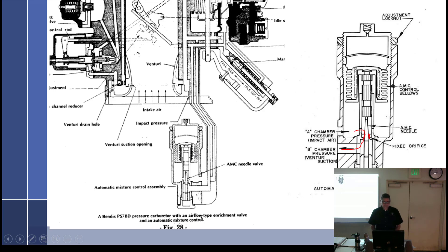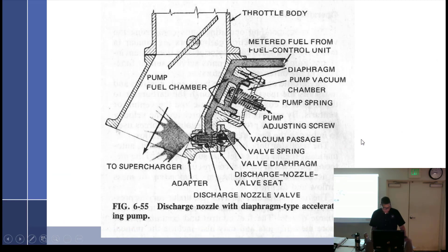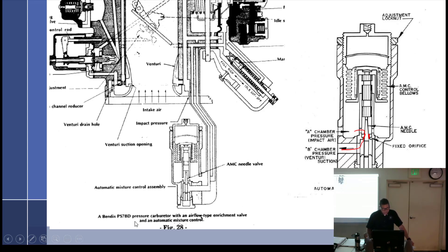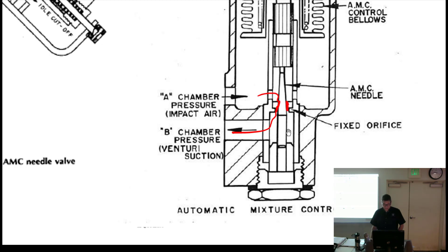Or between those two chambers A and B, as in the PS5. The AMC restricts or opens an air bleed. Here's the PS7.